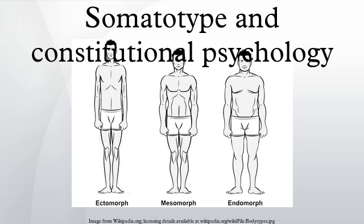In his 1954 book Atlas of Men, Sheldon categorized all possible body types according to a scale ranging from 1 to 7 for each of the three somatotypes, where the pure endomorph is 7-1-1, the pure mesomorph 1-7-1, and the pure ectomorph scores 1-1-7. From the type number, an individual's mental characteristics could supposedly be predicted.